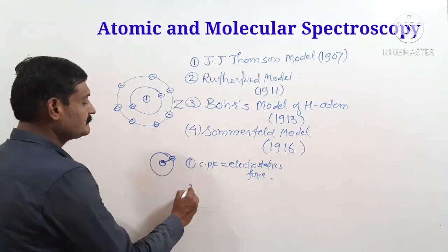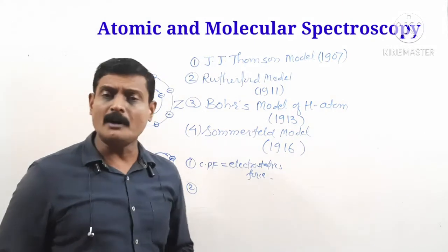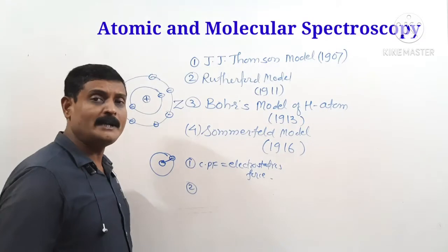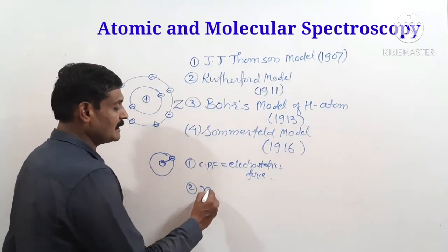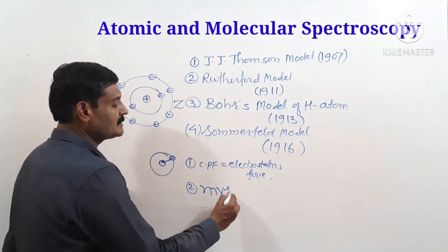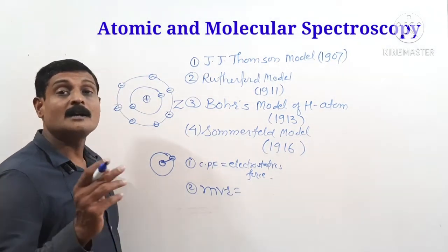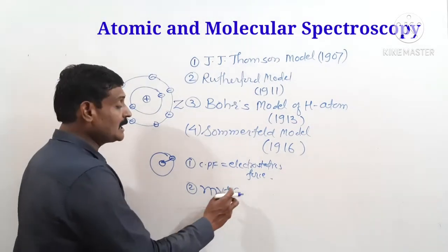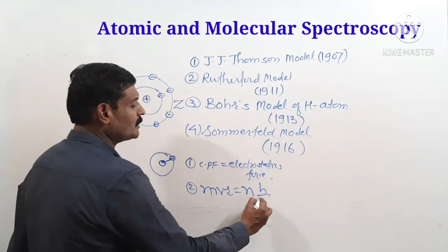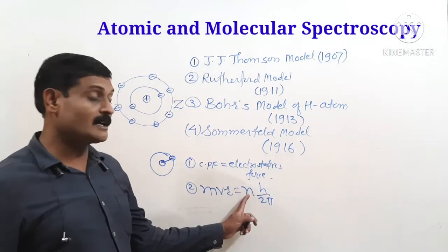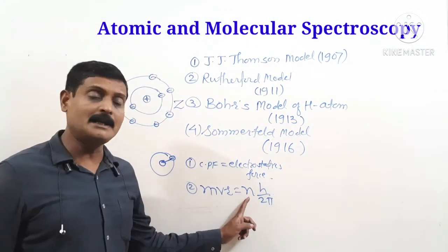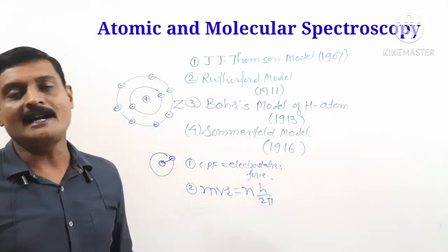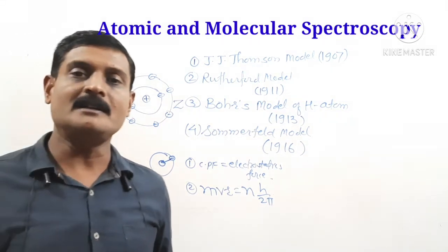The second postulate states that the electron does not revolve in any arbitrary circular orbit, but only in those orbits where the angular momentum is equal to n times h upon 2π. The angular momentum is mvr, and it must equal an integral multiple of h upon 2π, where n is an integer. The electron revolves only in such allowed orbits.